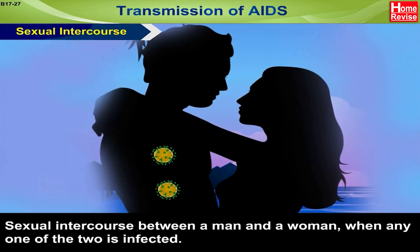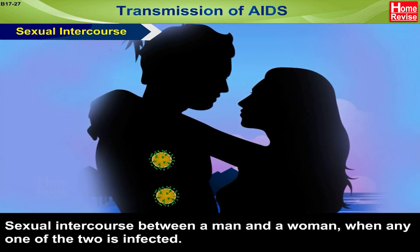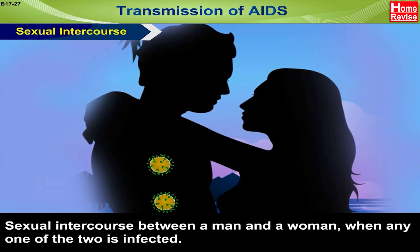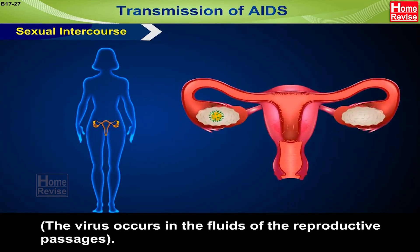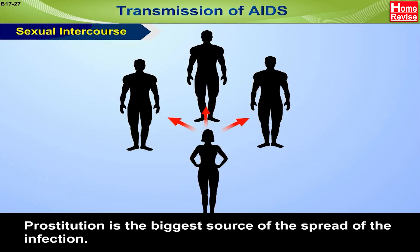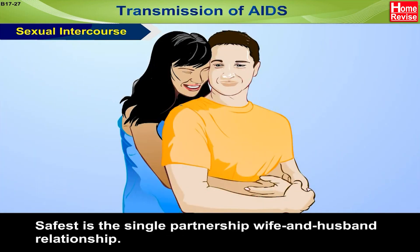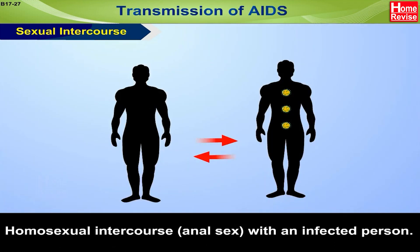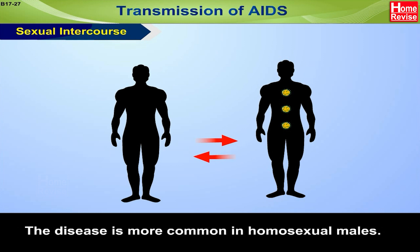Transmission of AIDS. Sexual intercourse between a man and a woman when any one of the two is infected — the virus occurs in the fluid of the reproductive passages. Prostitution is the biggest source of the spread of the infection. The safest relationship is a single partnership, i.e., wife and husband. Homosexual intercourse or anal sex with an infected person also transmits the disease; it is more common in homosexual males.